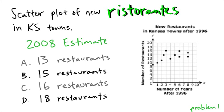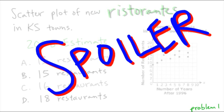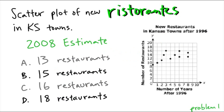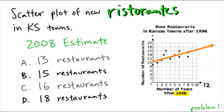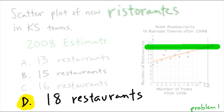So go ahead and do that. Spoiler alert — line of best fit. You can see the data takes a trend like that orange line of best fit. In 2008, that is going to be 12 years after 1996. So what you do is you go straight up from the 12, and you go over, and you can see a good estimate would be 18 restaurants.